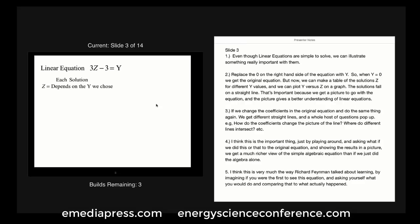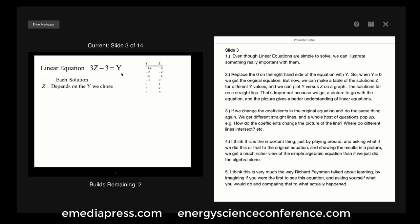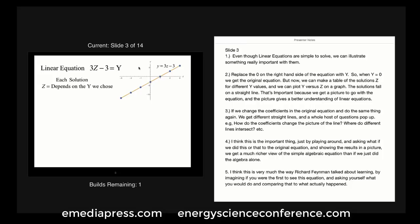Even though linear equations are simple to solve, we can illustrate something really important with them. Replace the 0 on the right-hand side with Y, so that when Y equals 0 we get the original equation. Now we can make a table of the solution Z for different values of Y, and plot Y versus Z on a graph. The solutions fall on a straight line.